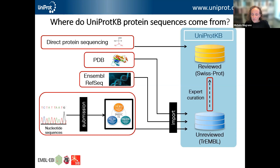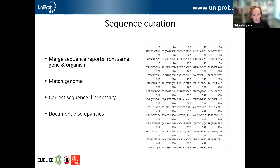We have a team of curators who take these unreviewed TrEMBL records and add a whole slew of information before these entries make their way into the Swiss-Prot section, as well as continuously updating existing Swiss-Prot records as new information becomes available. UniProt provides a huge amount of information, but it is a sequence database, so there is a lot of effort put into making sure that the sequences provided are as accurate as possible. The first step in the curation process is to make sure the sequence is correct.